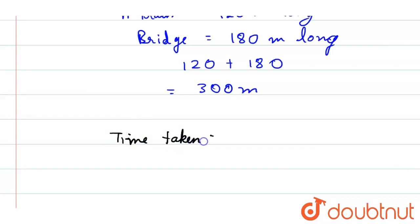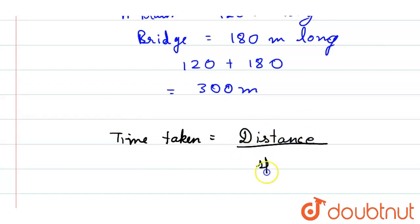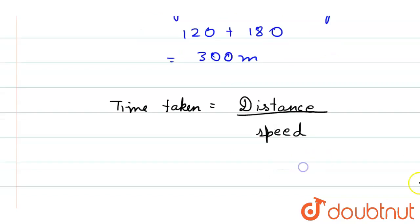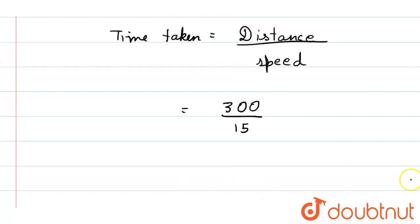Time taken equals distance by speed, so that is 300 by 15. If we calculate this we will get 20 seconds. So this will be the answer for this question.